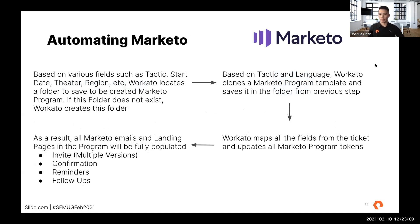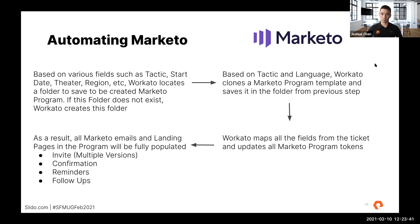Then we move over to Marketo. Based on the various fields on the ticket — such as tactic, start date, theater, and region — Workato locates a folder based on that naming convention. If it doesn't find this folder, it creates the folder within Marketo. This is really beneficial because we don't have a 2022 content syndication folder right now, and our agencies sometimes don't really know these rules themselves and save things all over the place, making a messy instance. This ensures your instance will always be scaled out correctly as time passes and you run more campaigns.